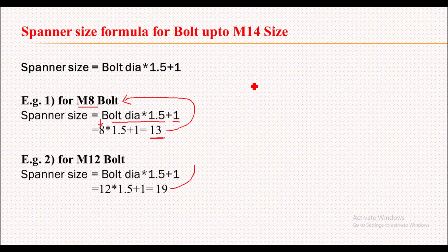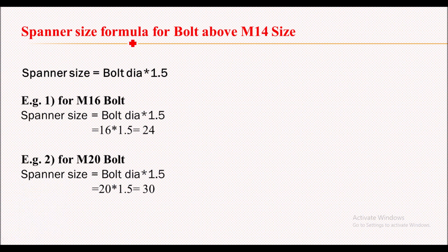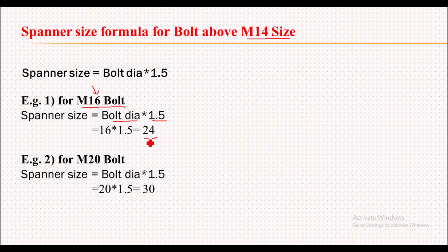For bolts above M14 size there will be a different formula. Spanner size = bolt diameter × 1.5. Let's take one example: for an M16 bolt, spanner size = 16 × 1.5 = 24. So a 24 spanner will be required for an M16 bolt.